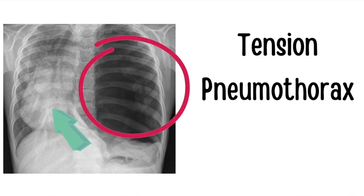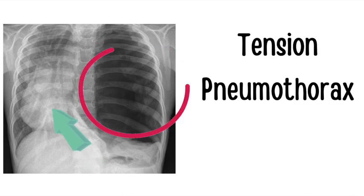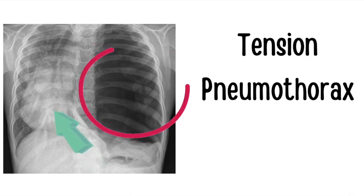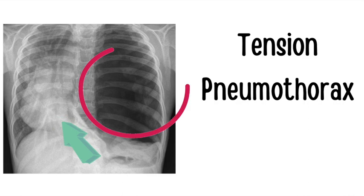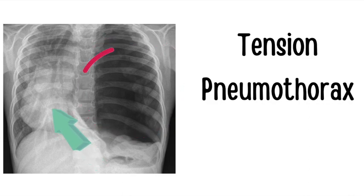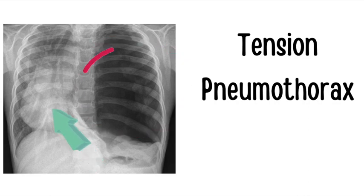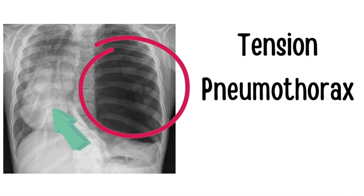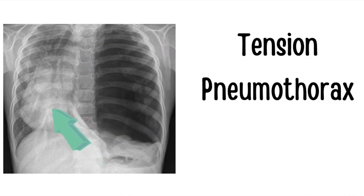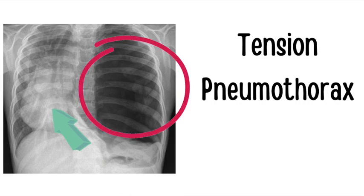This is an emergency. For initial treatment we use needle thoracentesis, then place a chest tube afterwards. For a simple pneumothorax, go straight to the chest tube. A key way to distinguish between simple and tension pneumothorax is that in tension pneumothorax there is deviation of the trachea or mediastinum to the contralateral side, which is not seen in a simple pneumothorax.